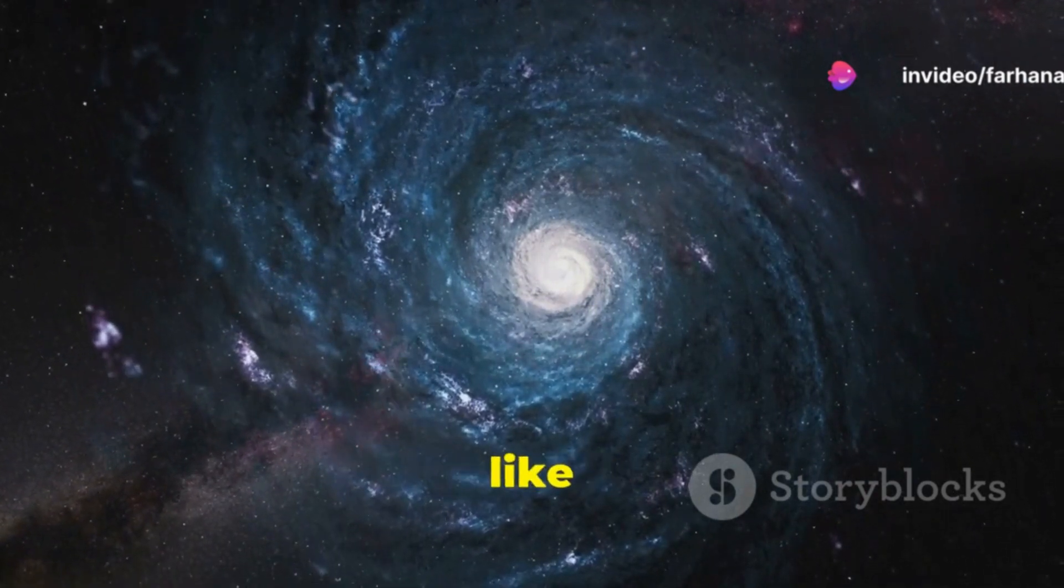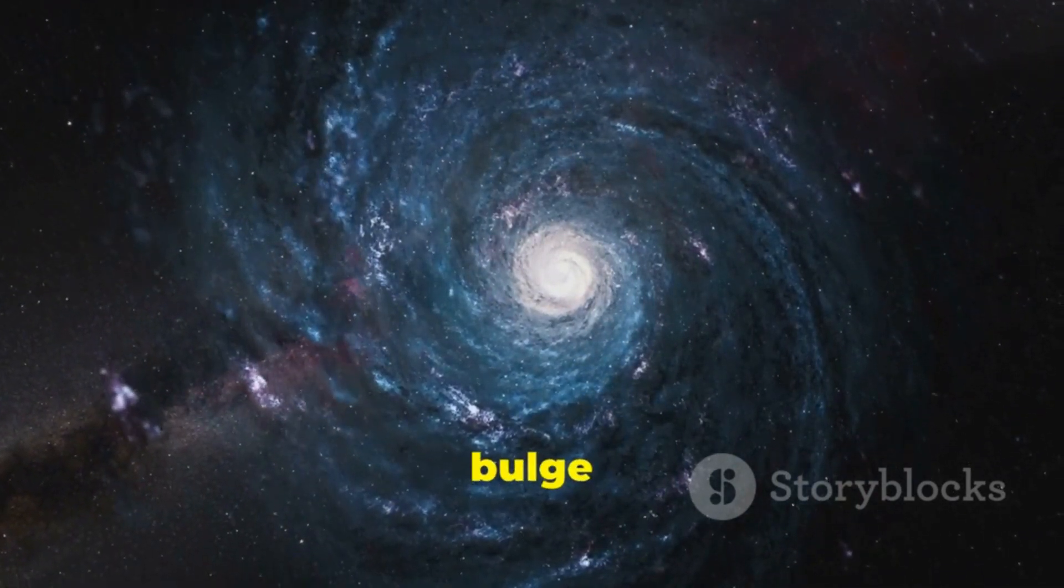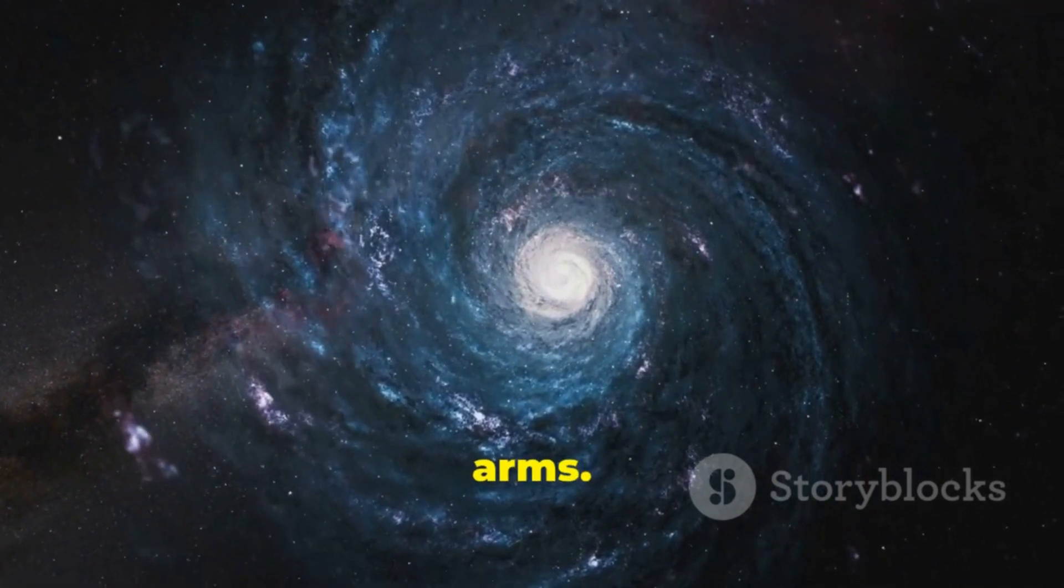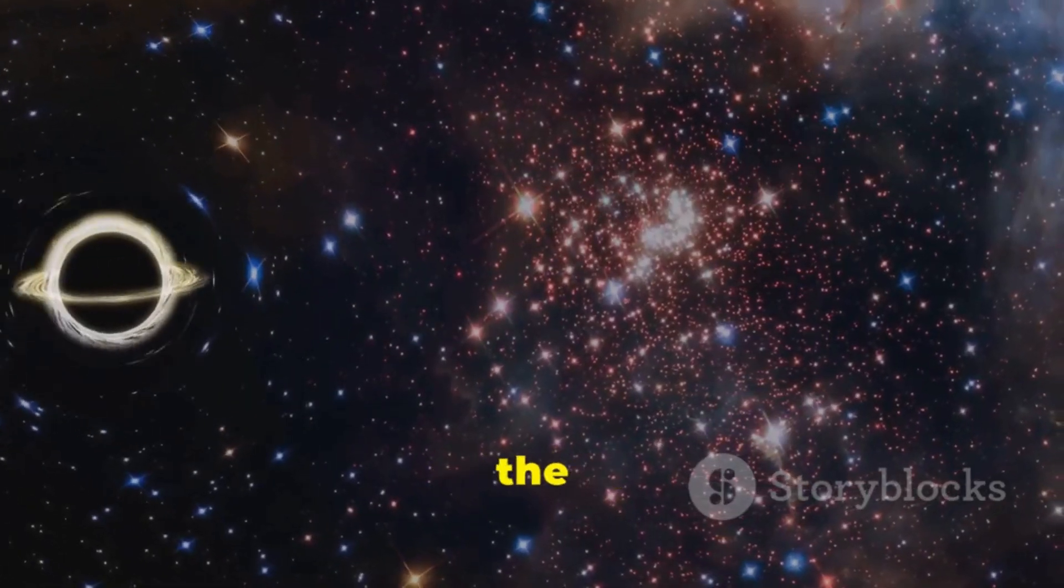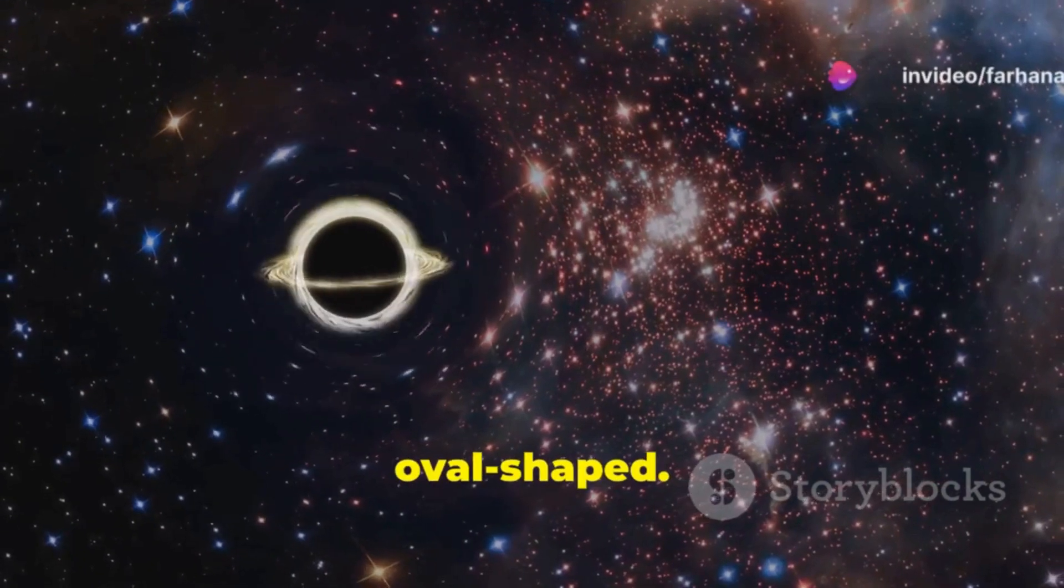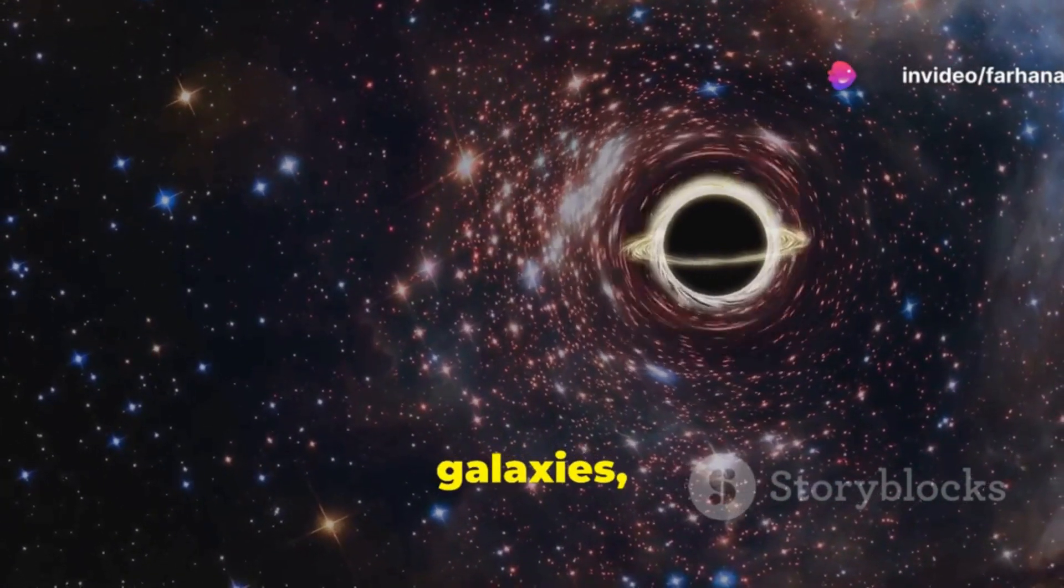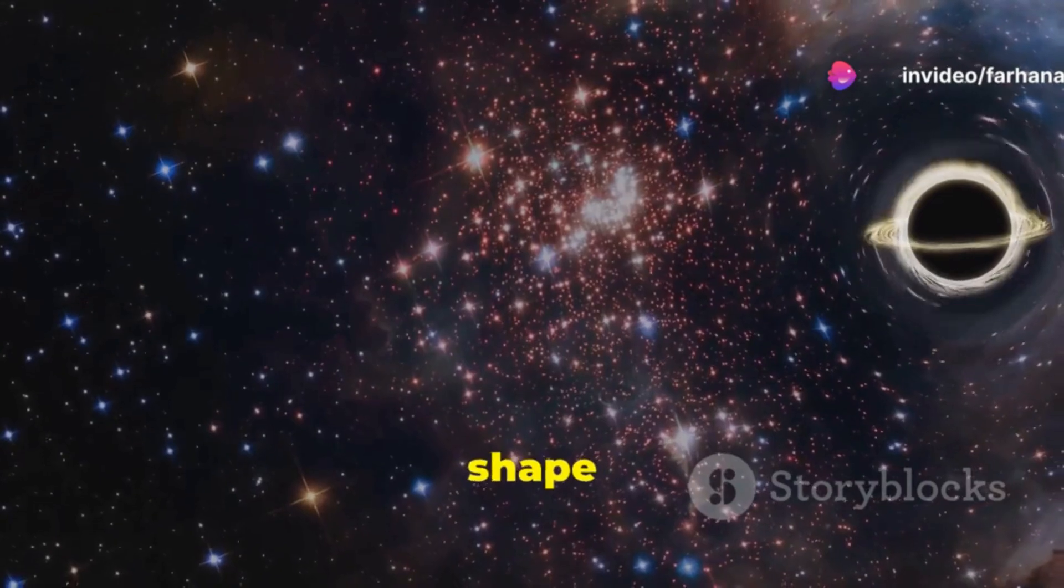Spiral galaxies, like our own Milky Way, feature a central bulge surrounded by spiral arms. Elliptical galaxies, on the other hand, are smooth and oval-shaped. Then there are irregular galaxies which boast no defined shape at all.